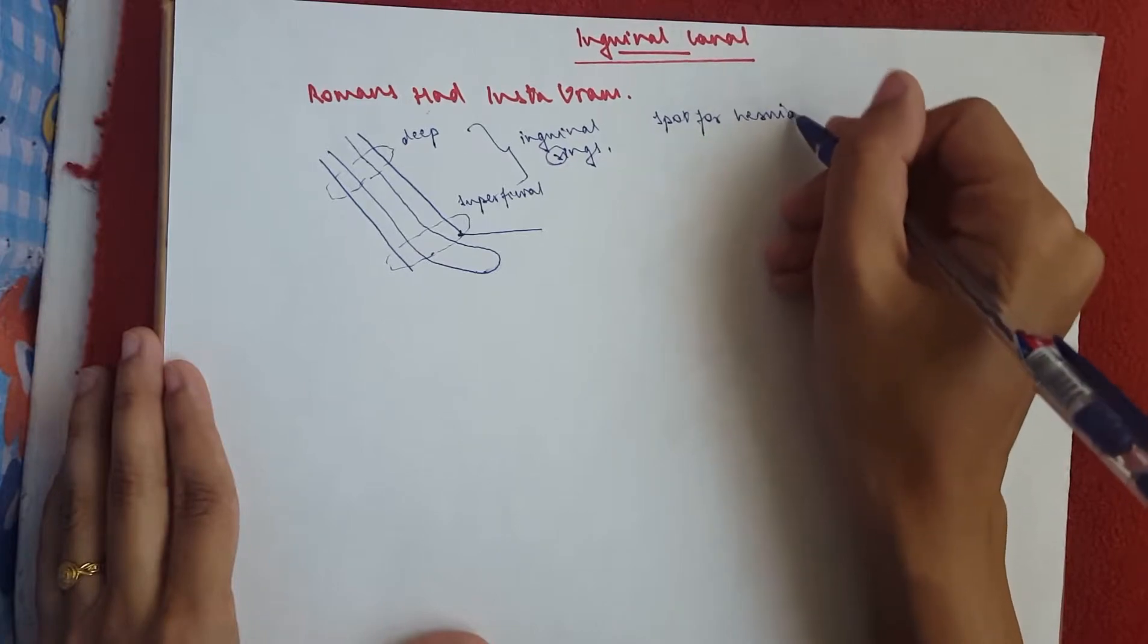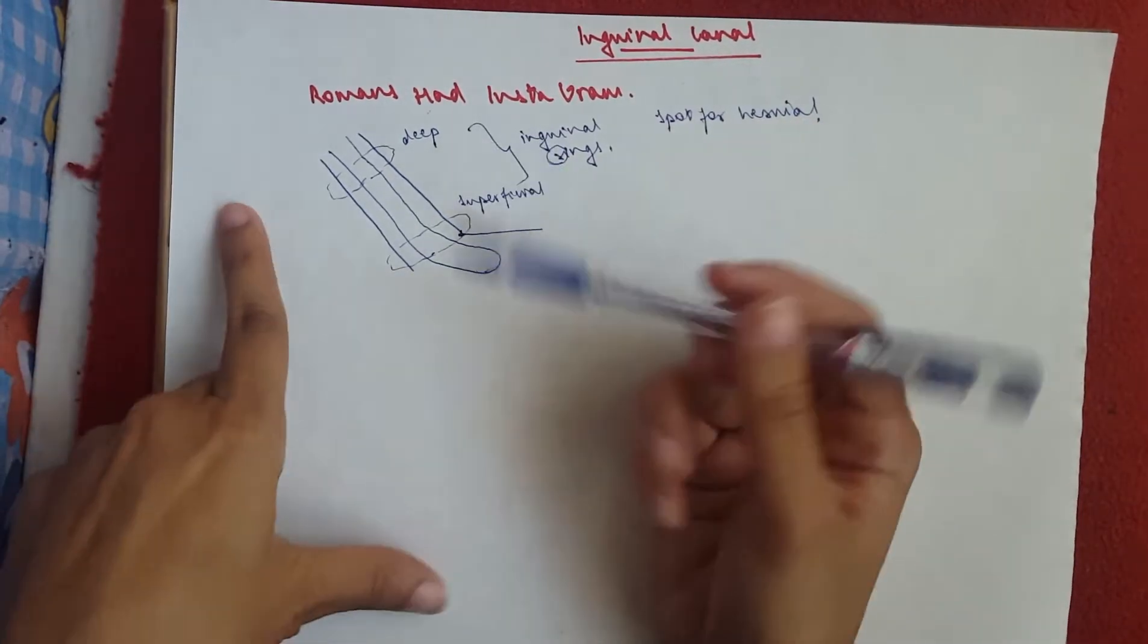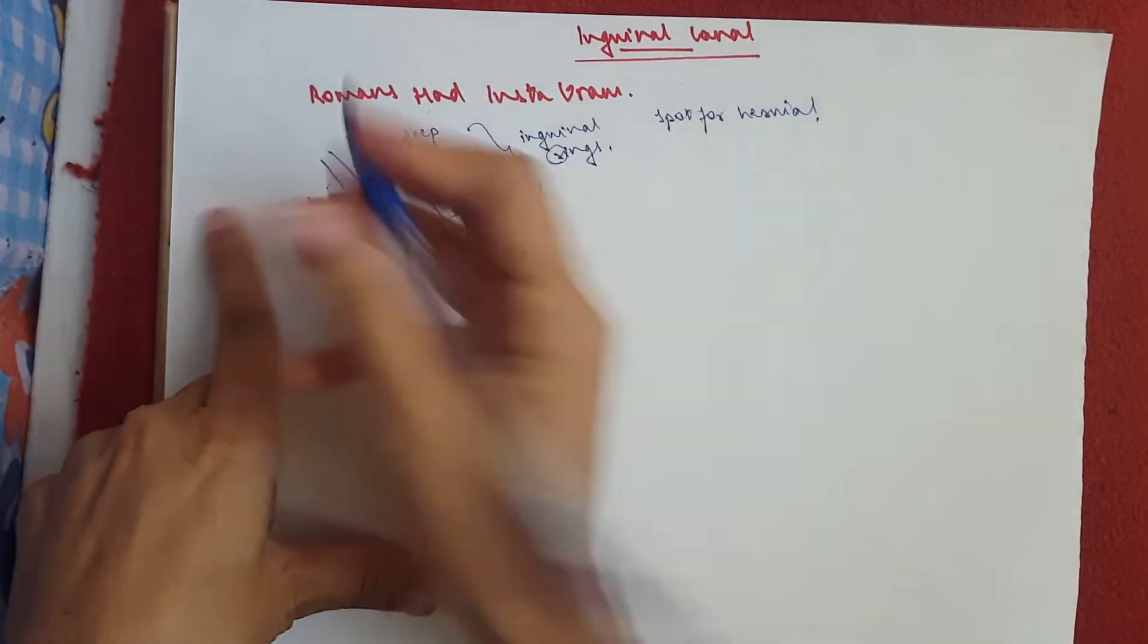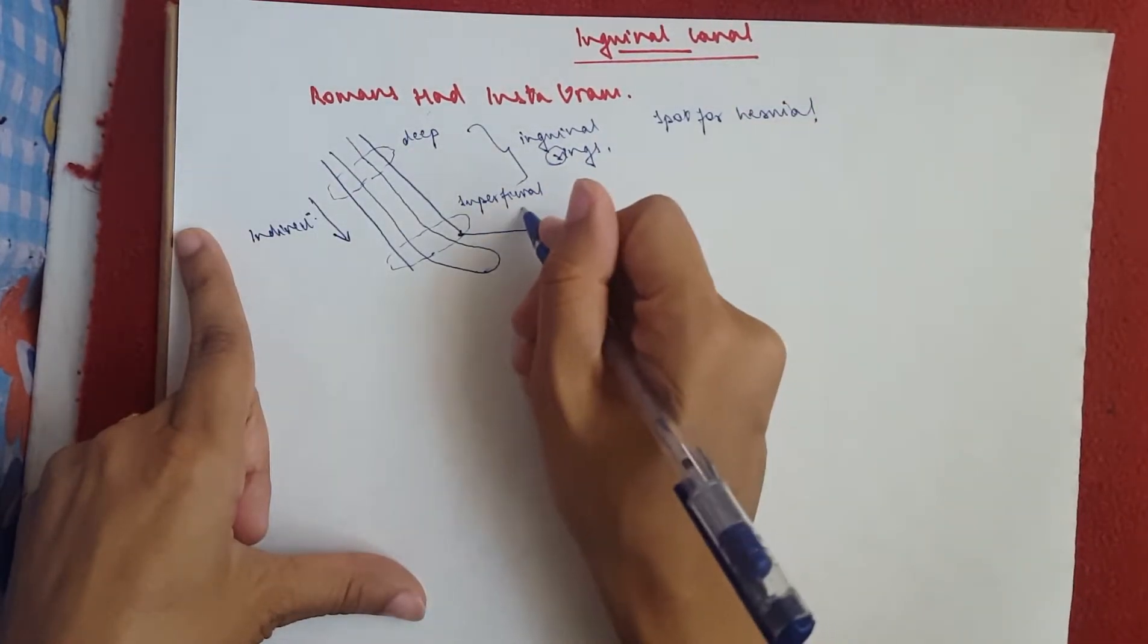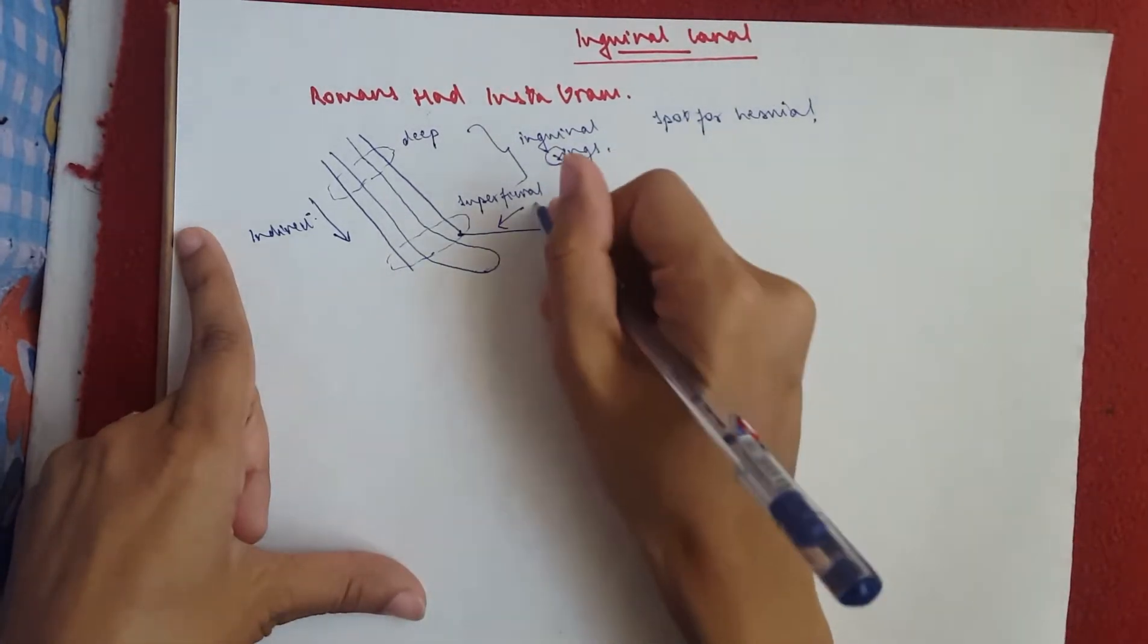Now, if the hernia appears to come from this direction, it would be an indirect hernia. And if it appears from this direction, it would be a direct hernia.